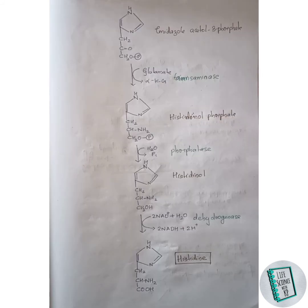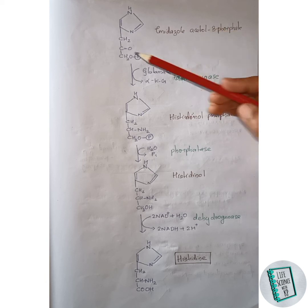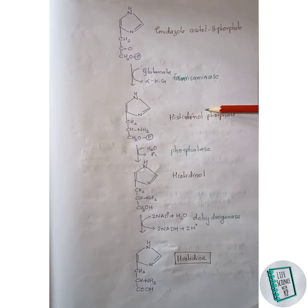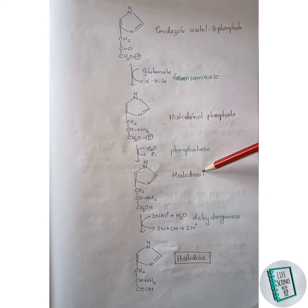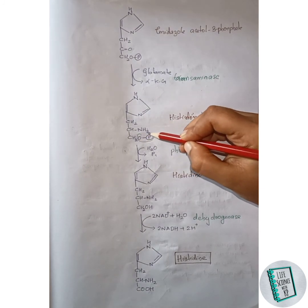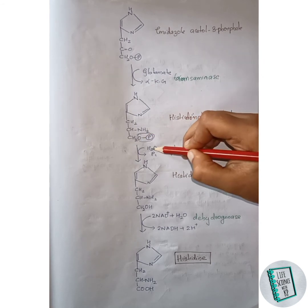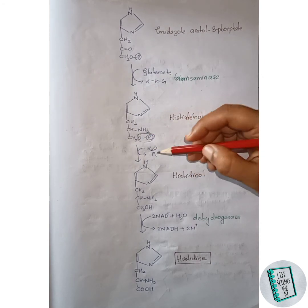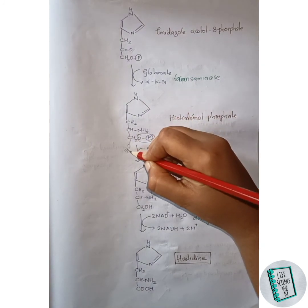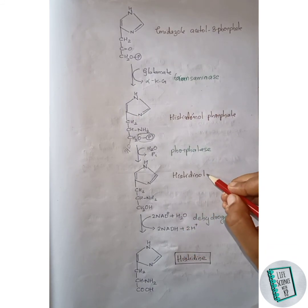Imidazole acetol 3-phosphate then undergoes transamination in the presence of transaminase enzyme to form histidinol phosphate — the keto group is converted to an amino group. This histidinol phosphate then in the presence of phosphatase enzyme forms histidinol. The phosphate group is removed and an OH group from water attaches to the CH2, forming CH2OH. Thus histidinol is formed.